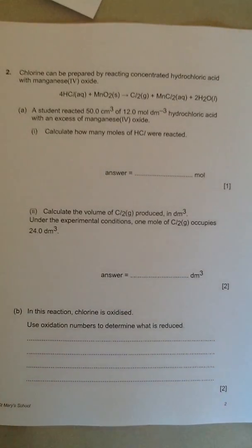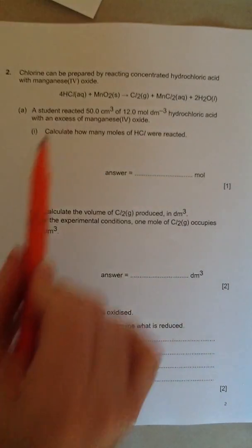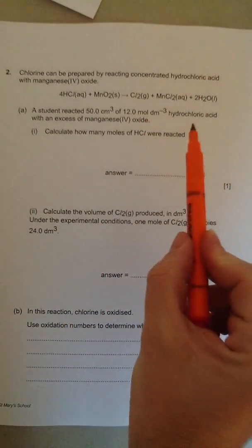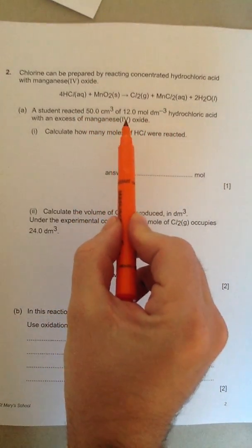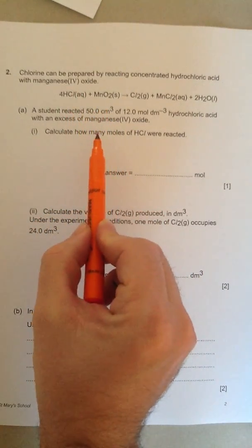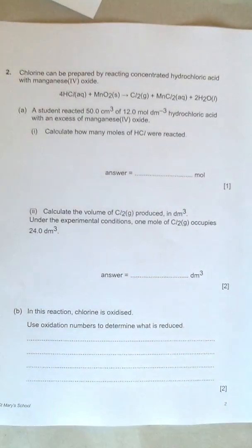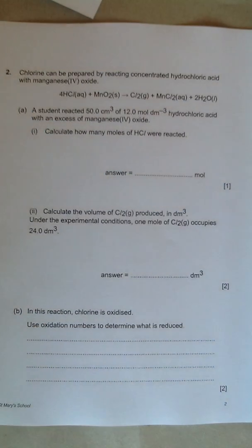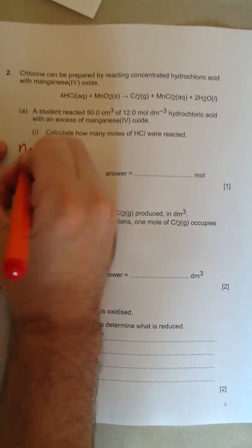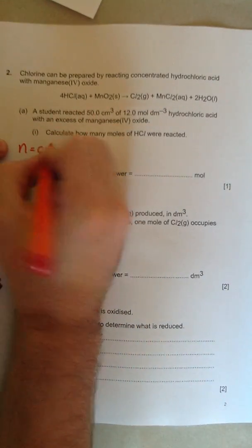So it starts off by saying a student reacted 50 centimetres cubed of 12 moles per decimetre cubed, 12 molar, hydrochloric acid with an excess of manganese 4 oxide. So HCl plus MnO2. Calculate how many moles of HCl were reacted. So if you're given a solution, and we are given a solution because it's aqueous, the equation we need to use is n equals C times V.